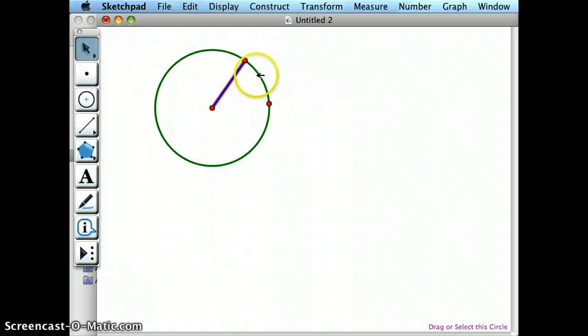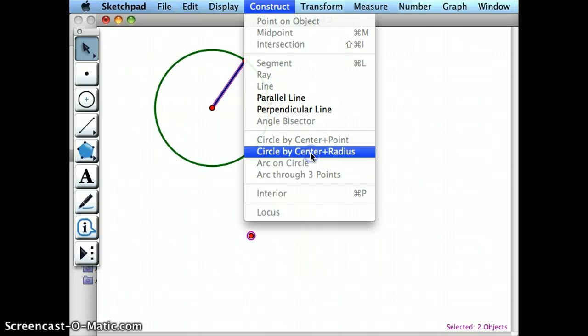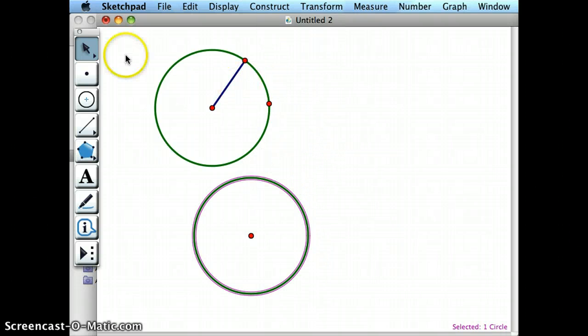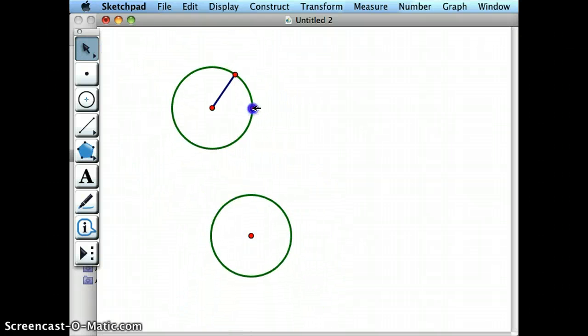Then to make a copy of this circle, what I need to do is start with a point and then choose the radius of the circle I want to make an equivalent circle to, and then go ahead and construct circle by center and radius. So basically then if I change the size of one, it changes the size of the other.